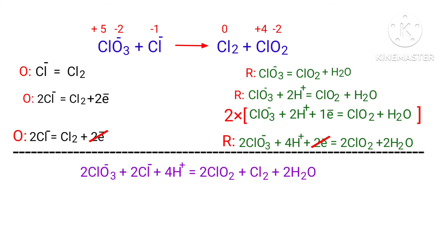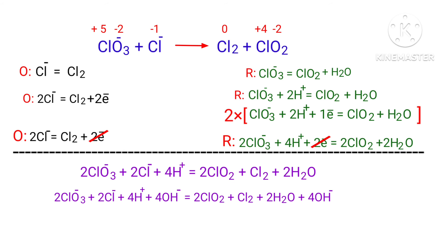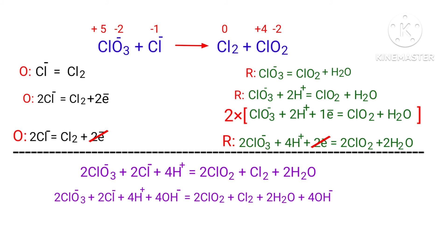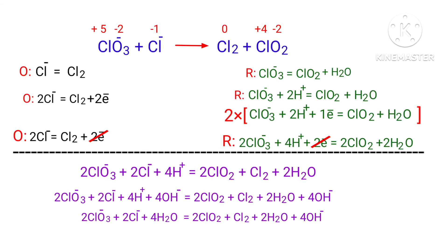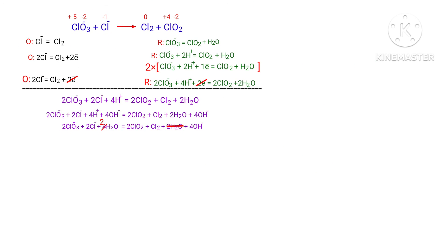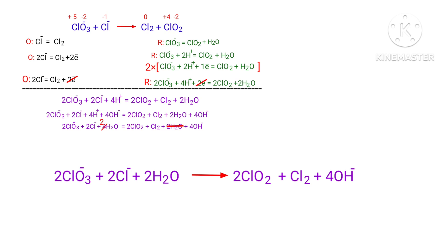For a reaction in a basic medium, add one OH- for every H+ present in the equation. The OH- must be added to both sides to keep charge and atoms balanced. Combine OH- and H+ that are present on the same side to form water. Now cancel the same terms. The equation is now balanced in a basic medium.